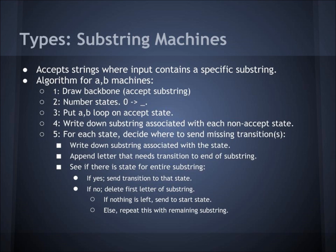Next we have substring machines. These accept strings where the input contains a specific substring. To create these we have an algorithm. First, you draw the backbone, which accepts the substring. Second, you number the states 0 through however many states you have. Third, you put an AB loop on the accept state.